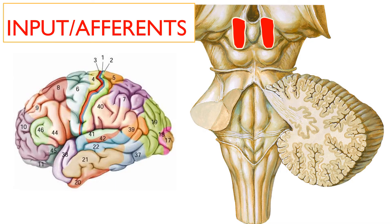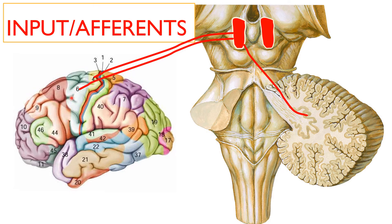Now let us see which parts of the brain provide inputs to the red nucleus. The first input comes from the contralateral dentate nucleus of the cerebellum — for example, the left-sided red nucleus receives input from the right-sided dentate nucleus. The next input comes from area 4 and area 6 of the cerebrum, corresponding to the pre-central gyrus and the primary motor area.